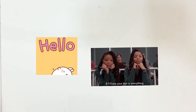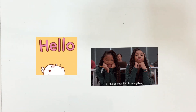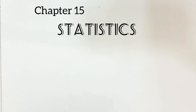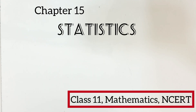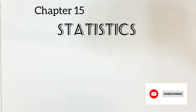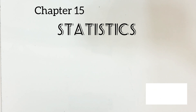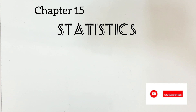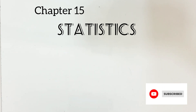Hello, my dear students, welcome back to our channel. We were discussing the chapter Statistics. So far we discussed measures of dispersion — mean deviation, standard deviation, and all. We know if these measures of dispersion are very high, we say that the data are more scattered or more variable, and if it is less, we say the data are more consistent.